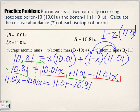So 11.01x minus 10.01x is 1x, which is just x, equals...